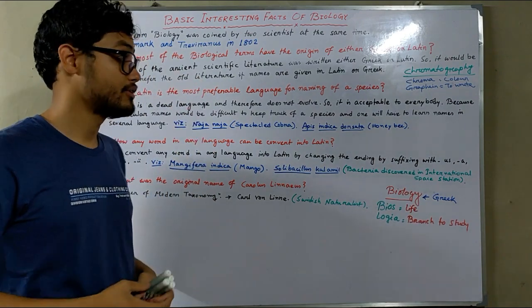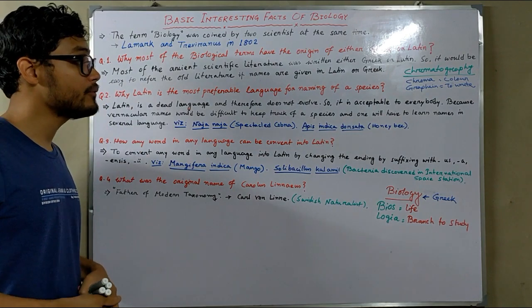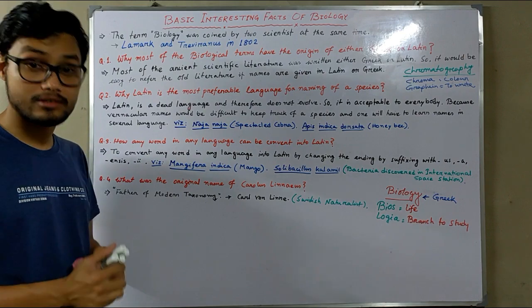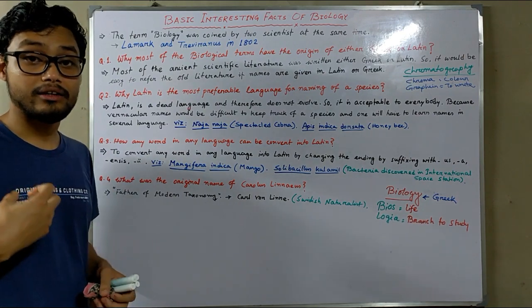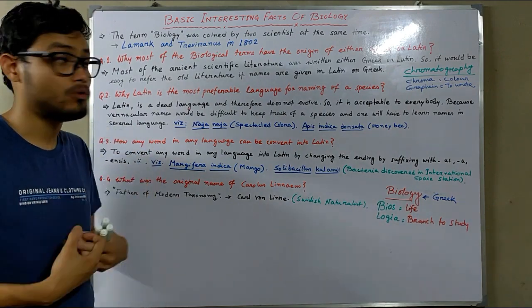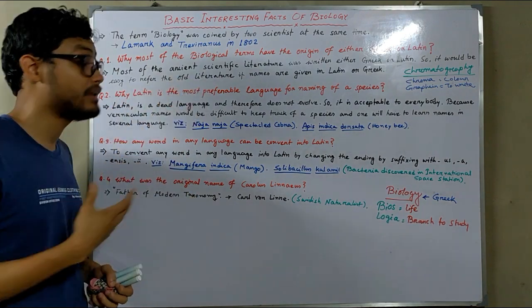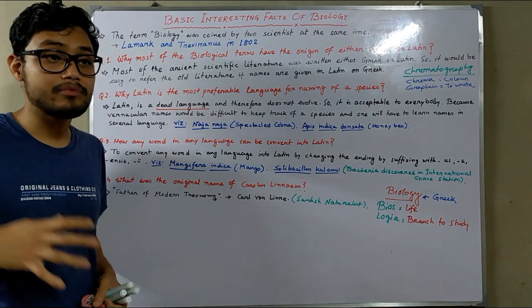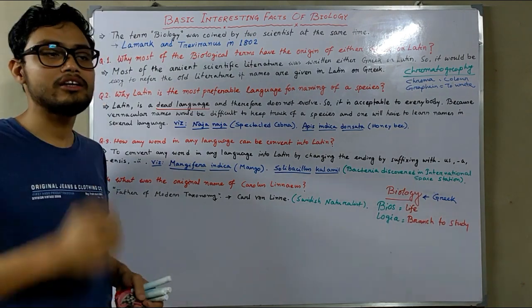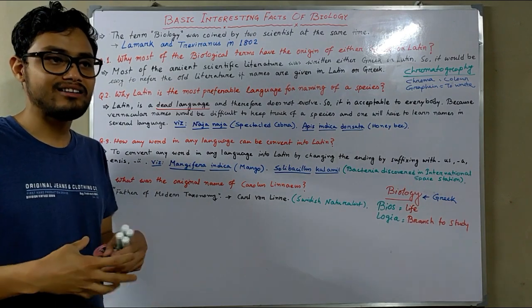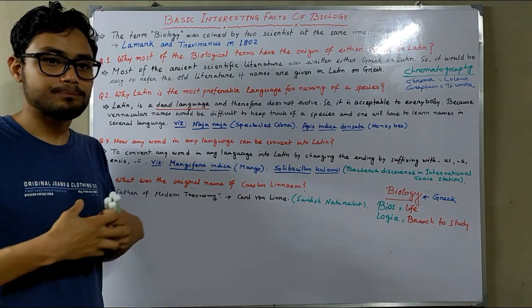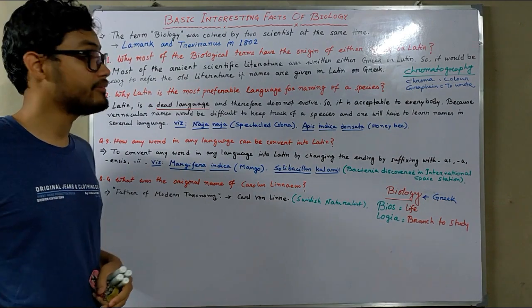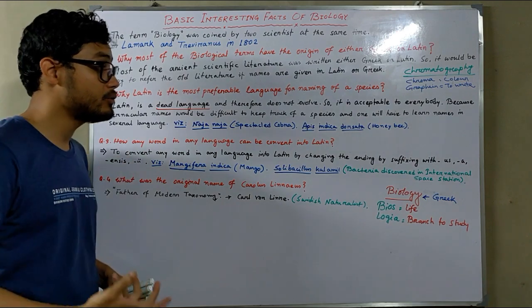The second thing: why is Latin the most preferable language for naming species? Every species has its own name — just like humans have the scientific name Homo sapiens. Latin is preferred because it is a dead language; it does not evolve over time, so it is acceptable to everybody. Vernacular names would be difficult to keep track of species.